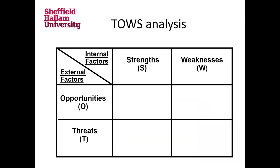There is a TOWS analysis template in the workbook on the module Blackboard site. What you have here in effect is eight cells which are in play: the strengths cell, the weaknesses cell, the opportunities cell, and the threats cell. In these you would usually have a strengths title and then list and number the strengths from your SWOT. You can also just write this straight up — listing the strengths for your organisation in this cell. You have a list of strengths numbered — not just a bullet list, but numbered — and I'll explain why in a minute.